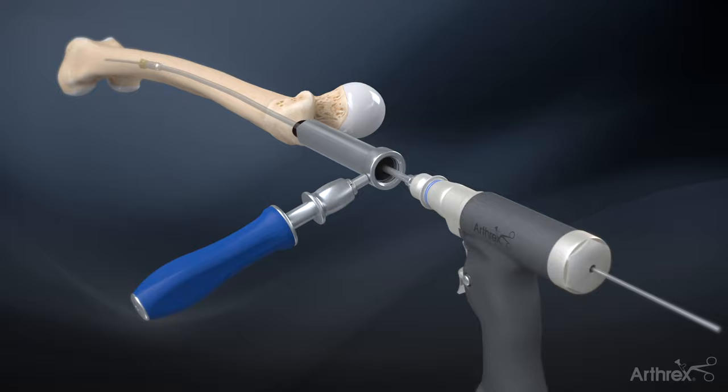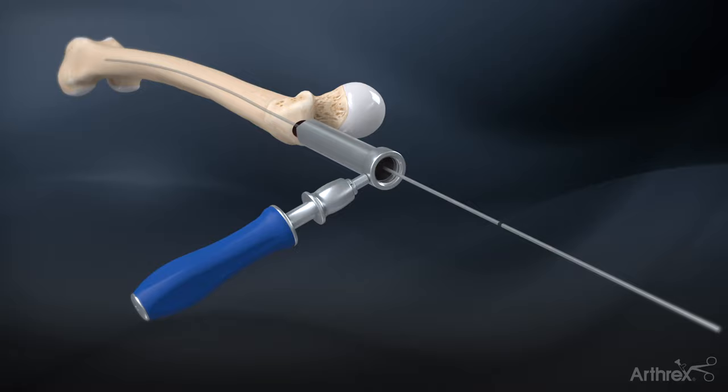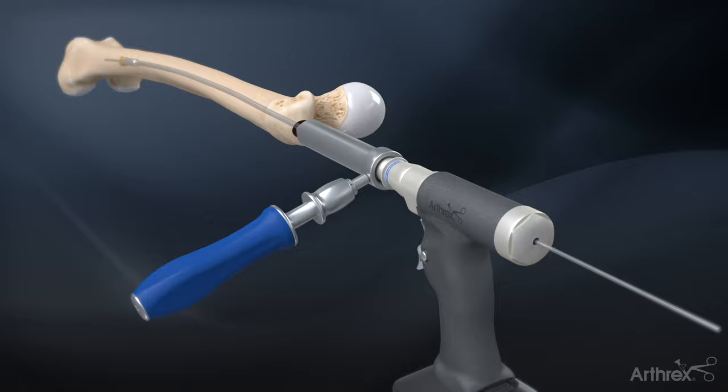The 8 mm end cutting reamer is used to ream out the central path for the nail. Progressively ream in diameter until cortical chatter is achieved.